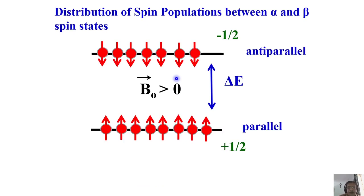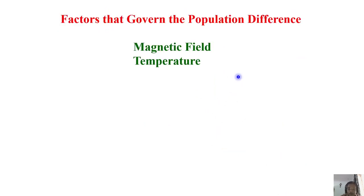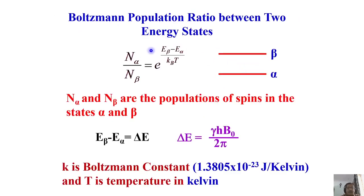If I try to find the spin populations: there will be more spins in the parallel orientation than the anti-parallel orientation. Alpha state is plus-half, beta state is minus-half — parallel or anti-parallel orientations. I calculate ΔE. The Boltzmann population distribution tells me there are more spins aligned in the direction of the field than opposing it. What factors govern the population ratio? One is energy separation — the larger the energy separation in the numerator, the larger the population ratio.